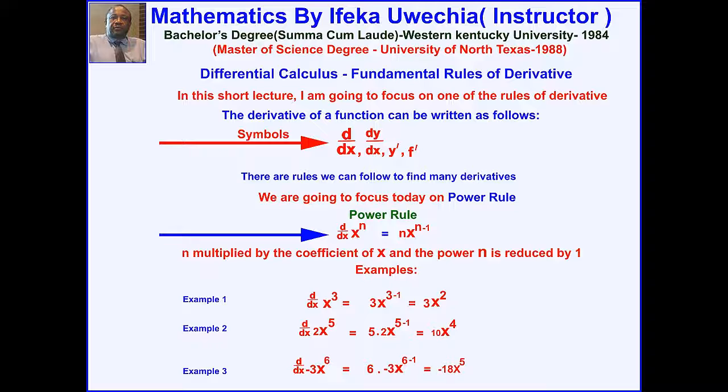All you have to do is to multiply x by 3 and the power 3 is reduced by 1, which is equal to 3x raised to the power 2. What do we do? We are just following the rules.